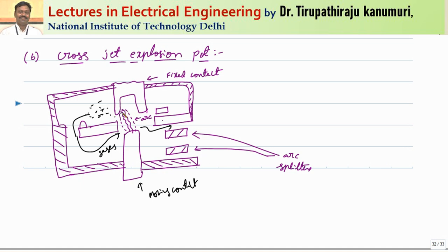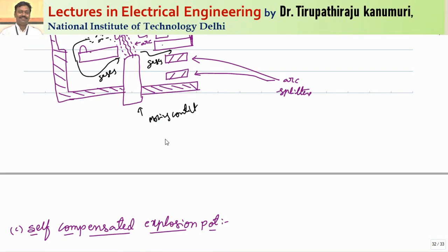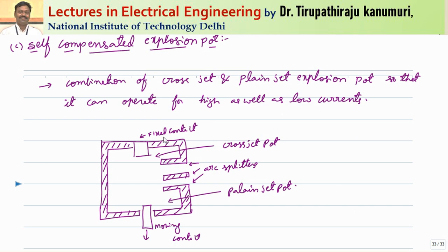The cross jet explosion pot has a disadvantage: it cannot be used effectively for small currents. Whenever there are small currents, whatever gases are produced escape from the arc splitters, sufficient pressure is not created, and the arc takes more length and more time to extinguish. Therefore this design is particularly suited for high fault currents only.